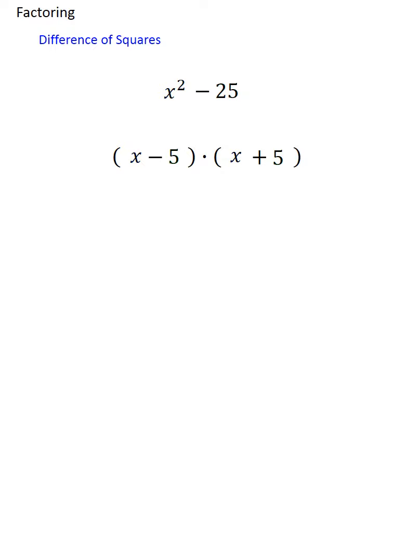By the way, when we have opposite middle signs but the binomials are otherwise identical, there's a name for that you'll hear from time to time. It's called a conjugate pair. And we've seen before what happens when you multiply a conjugate pair together.